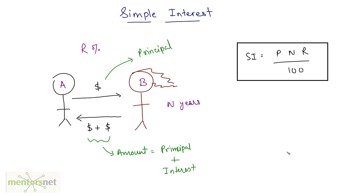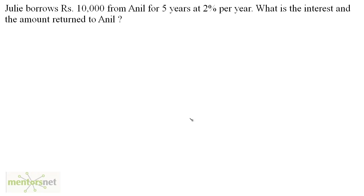So this is a very important formula — keep this in mind. Let us solve a problem now. The question is: Julie borrows 10,000 rupees from Anil for five years at the rate of 2% per year. What is the interest and the amount returned to Anil?